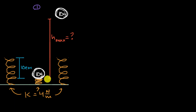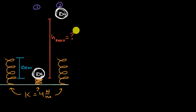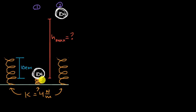We let go and the spring launches this mass into the air. The mass is going to hit some maximum height — let's call that scenario two. The question is: what is that maximum height based on all of the information given?